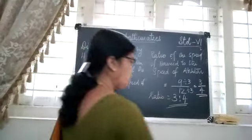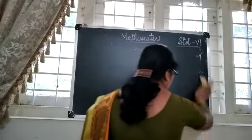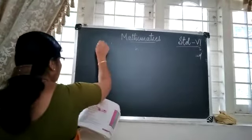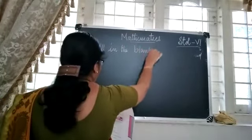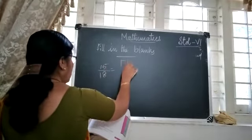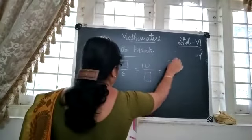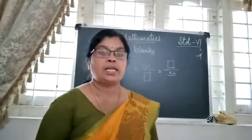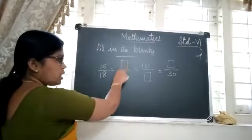The ratio is 3 is to 4. Now let us do the next question: Fill in the blanks. The problem is: 15 by 18 equals dash by 6 equals 10 by box equals box by 30. When we study fractions, we study equivalent fractions. Here you see 15 by 18, and you can see the next fraction where the numerator is not there.